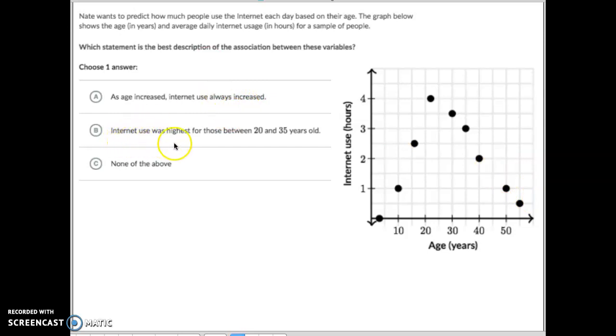Letter B says that the internet use was highest for those between the age of 20 and 35. So if we drew a box right here on these guys right here, you would notice that, yeah, between 20 and 35 years old, this is where you had the highest internet use. Before that and after that, it's a little bit lower. So yeah, this one would hold true.